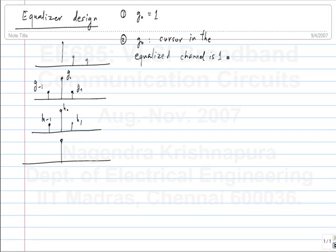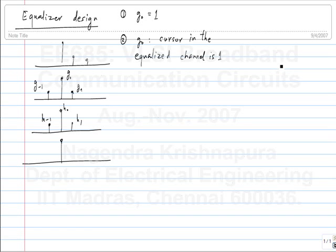It is not G0·H0 but the main tap — whatever that is — that equals one. The main tap is G0·H0 plus G-1·H1 equals one plus... You choose G0·H1 and the cursor equals the other equation. When you minimize with respect to the other two values like G1, you are minimizing the ISI taps.